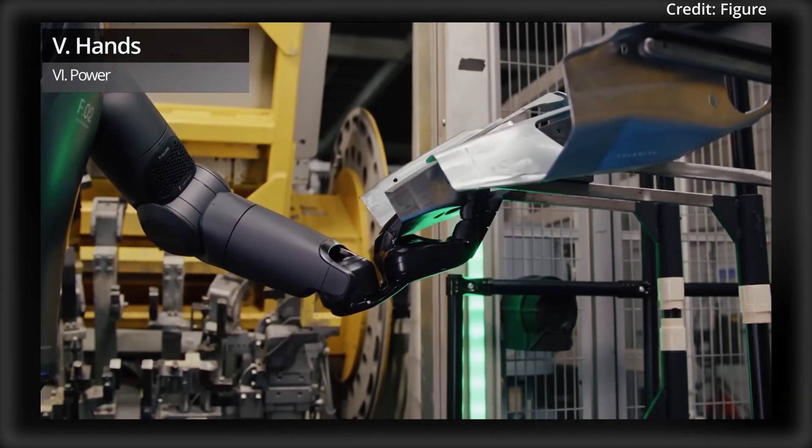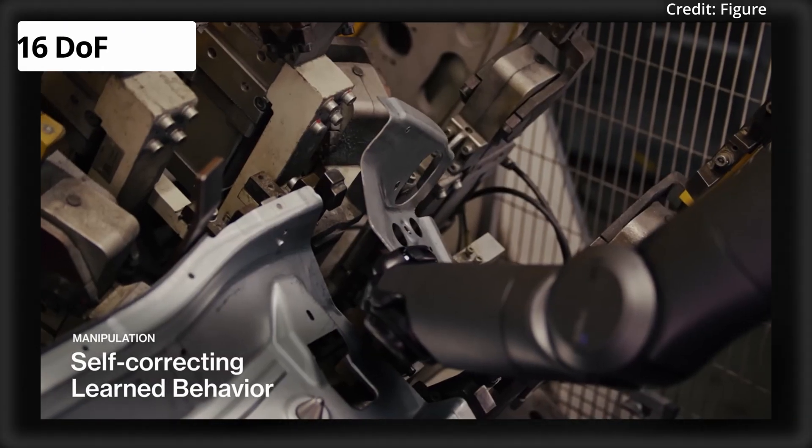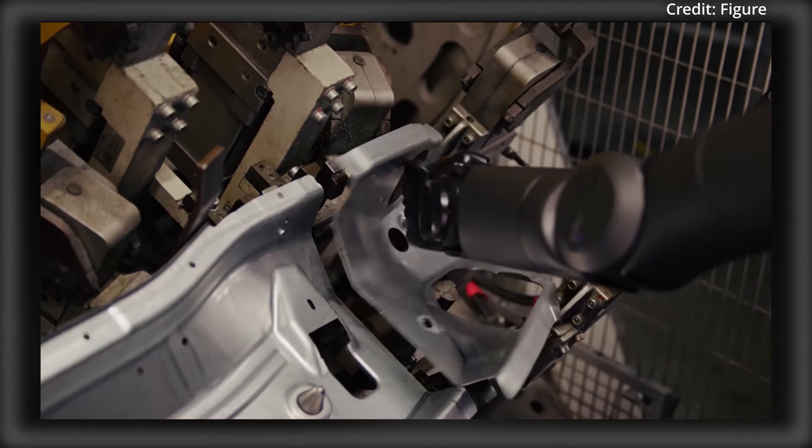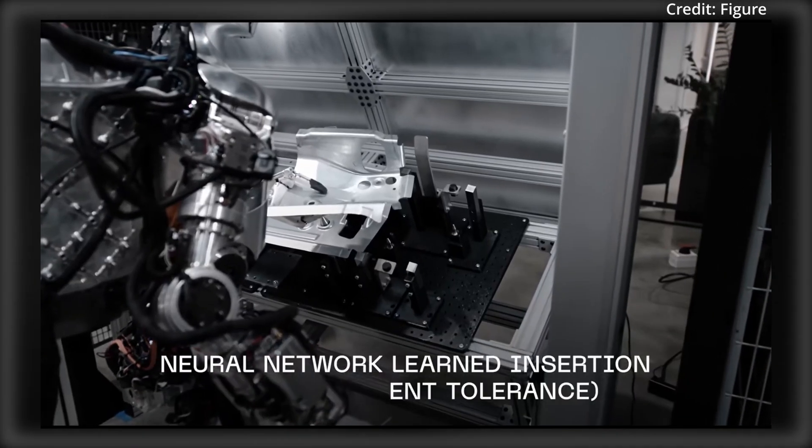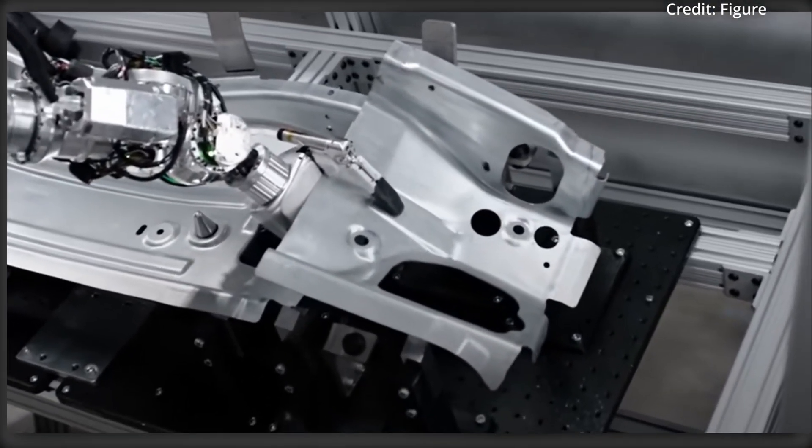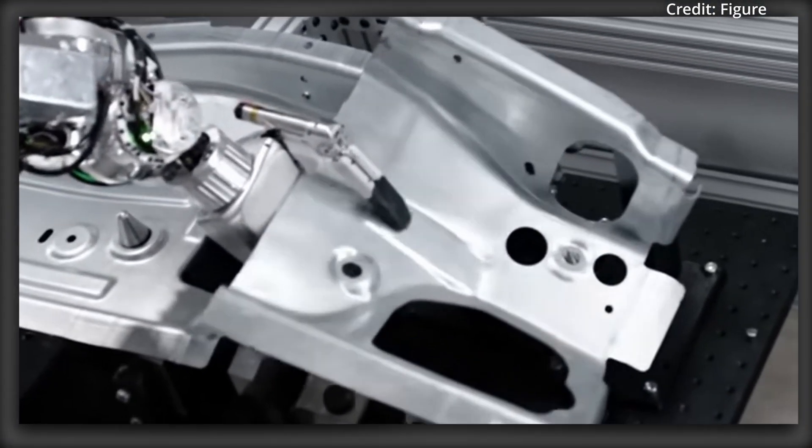And its hands are the robot's greatest engineering feat, featuring 16 degrees of freedom and having been specially upgraded to perform a wide range of human tasks, from delicate operations like picking up fragile objects, to strength-based maneuvers that require human-equivalent power.